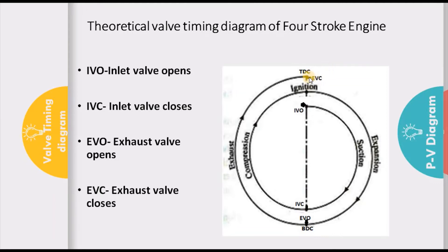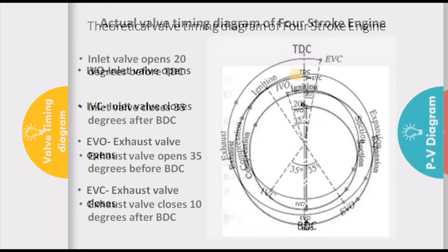Here the first cycle ends and the second cycle starts — that is, the inlet valve opens. After the exhaust valve closes, we assume that at the same instant the inlet valve opens and the next cycle starts again. This is your theoretical valve timing diagram.